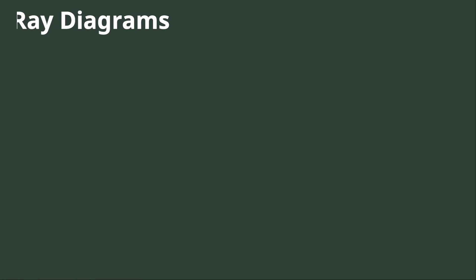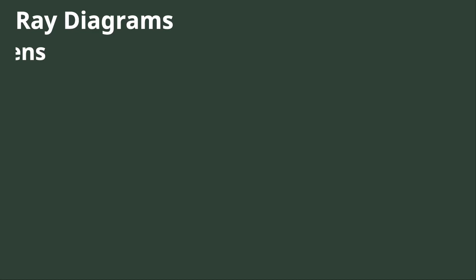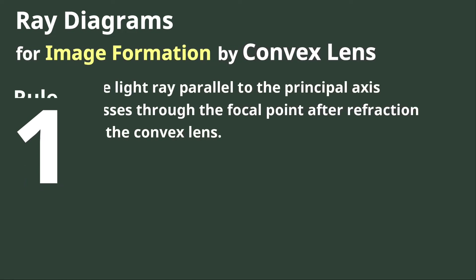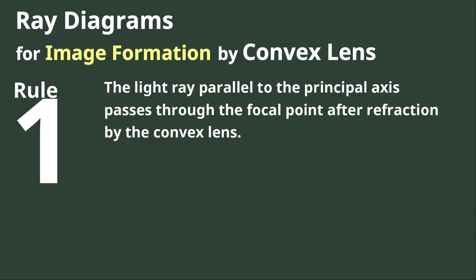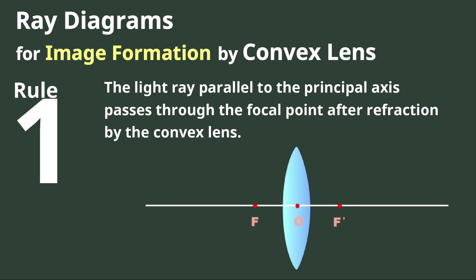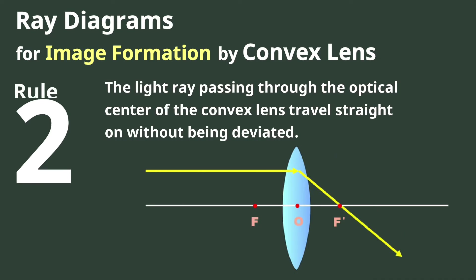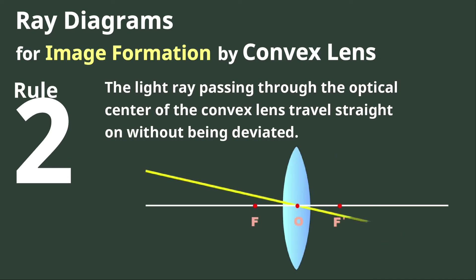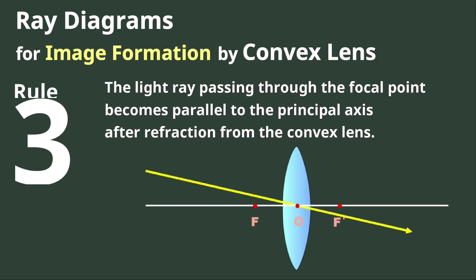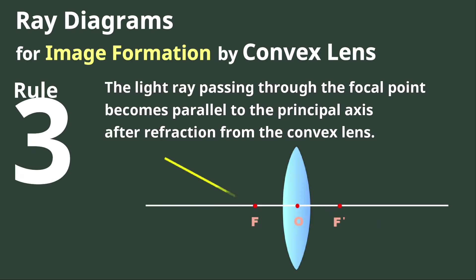The images formed by lenses can be constructed using ray diagrams. Similar to spherical mirrors, there are rules to follow for image formation by concave and convex lens ray diagrams. For the convex lens: Rule 1 — the light ray parallel to the principal axis passes through the focal point after refraction. Rule 2 — the light ray passing through the optical center of the convex lens travels straight on without being deviated or refracted. Rule 3 — the light ray passing through the focal point becomes parallel to the principal axis after refraction by the convex lens.